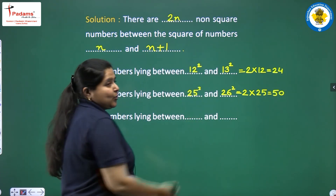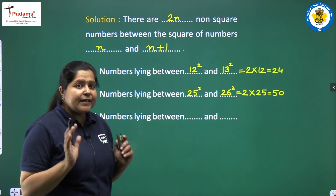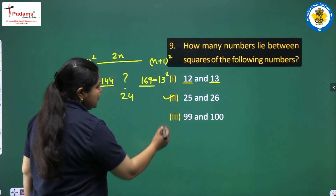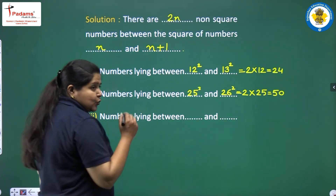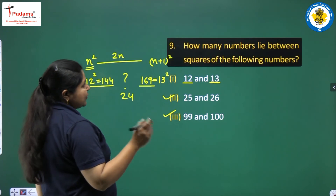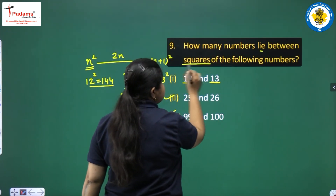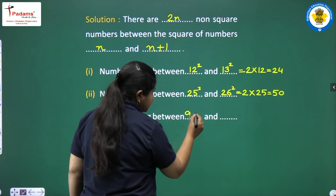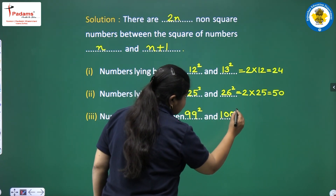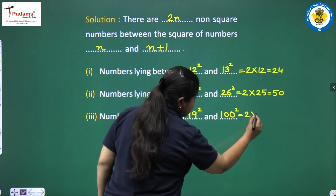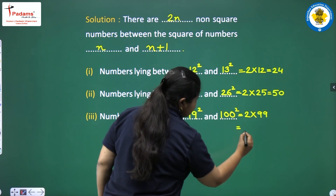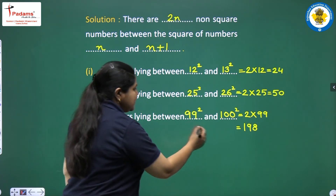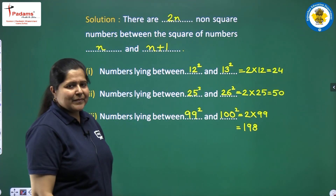So between 144 and 169, there are 24 numbers. For the second part, between 25 squared and 26 squared, it is equal to 2 multiplied by 25, which is 50. So 50 non-square numbers lie between the squares of these two numbers. For the third part, between 99 squared and 100 squared, it is 2 times 99, which equals 198.